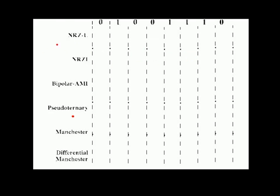Let's begin with None Return to Zero level. We talk about level zero and one — we talk about one level here. Here we talk about two levels, and here also two levels. This will be horizontal level, and this will be vertical level.